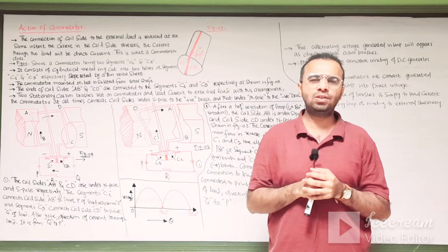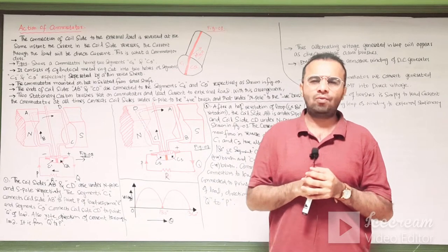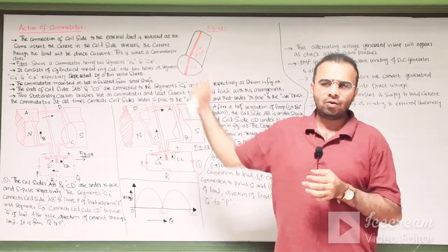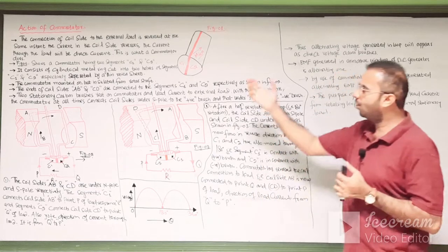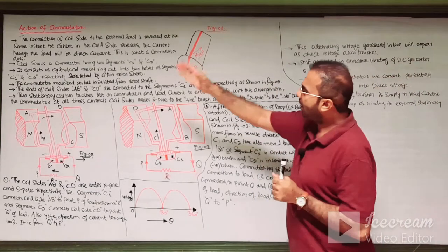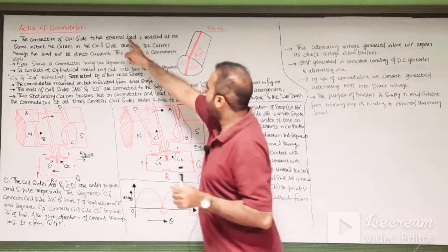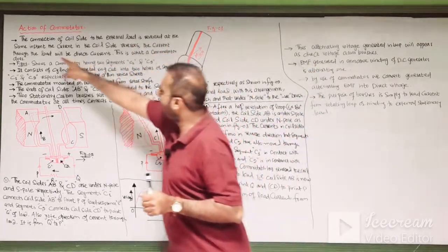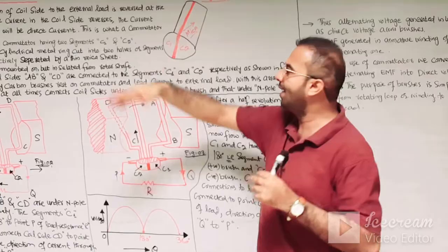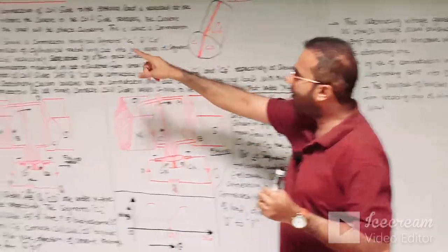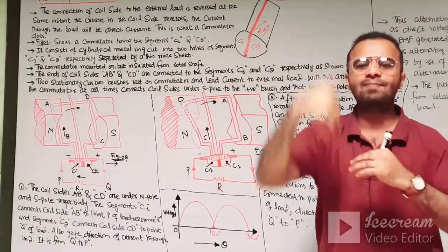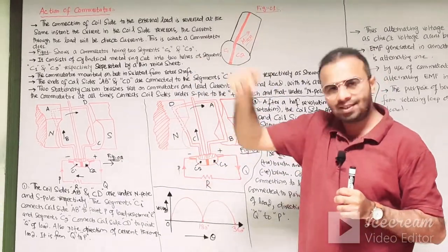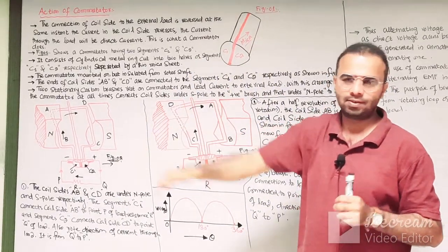Now we have to discuss how this commutator is formed and what will be the action of this commutator. The connection of the coil side to the external load is reversed at the same instant the current in the coil reverses. So the current through the load will be direct current. This is the function of the commutator — this is what the commutator does.